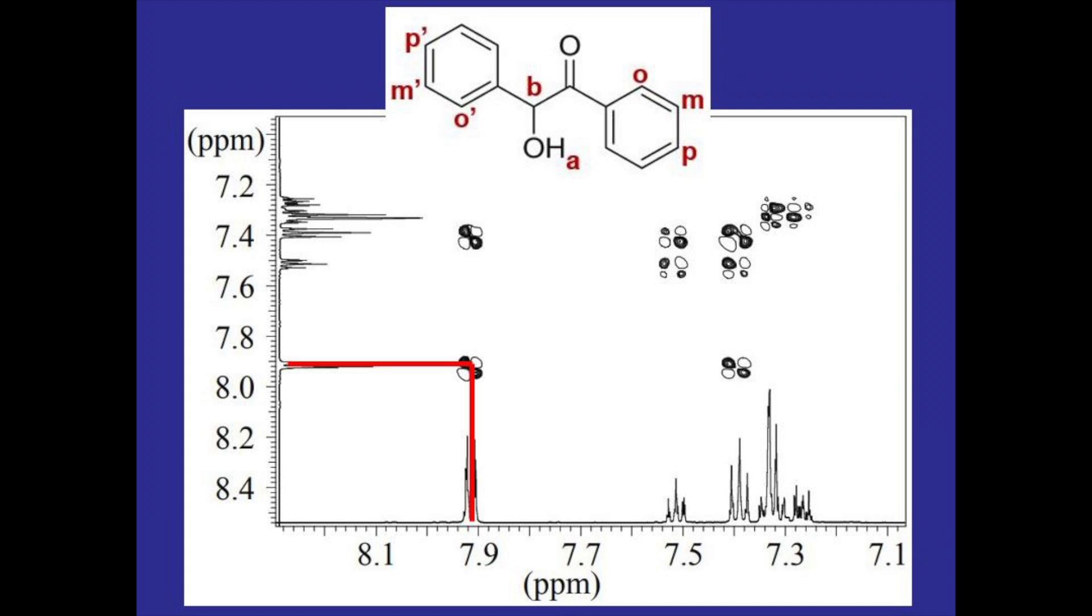But if we go up to the second spot and to the left that signal is coming from the hydrogen that is three to four bonds away from the hydrogen that is creating the doublet signal at 7.9.